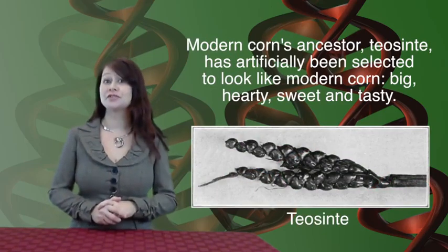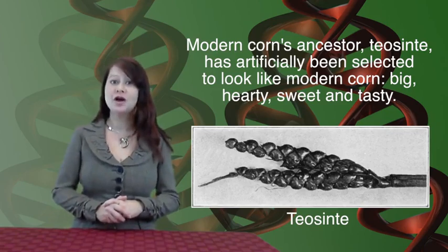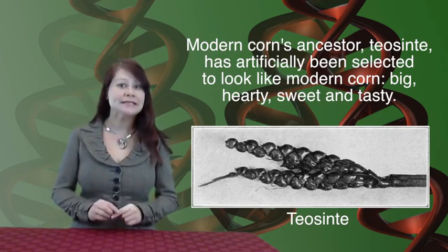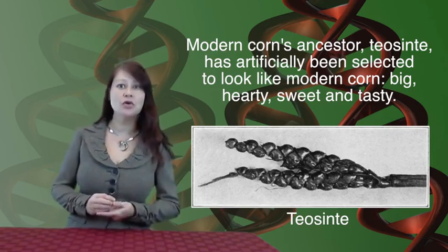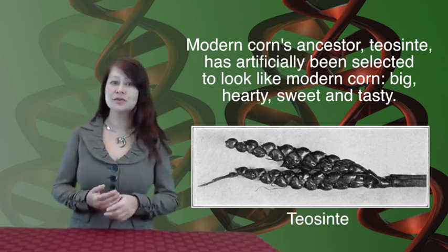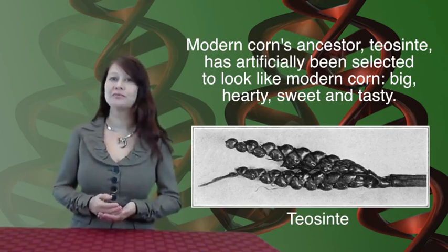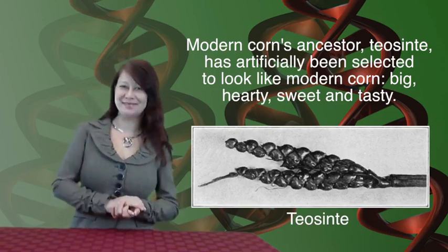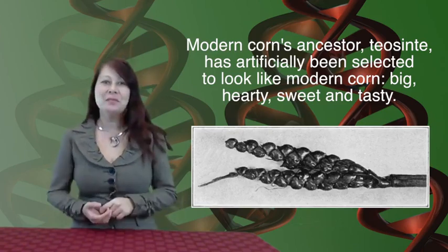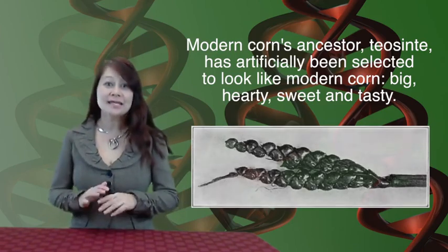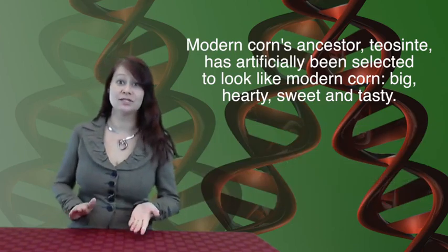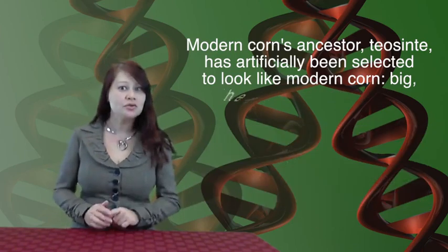Through artificial selection, farmers only planted seeds from corn that had the traits they were looking for — big, sweet, and yummy. Before these farmers had any idea of what DNA was, they were selecting for specific genes through selection of preferred phenotypes.